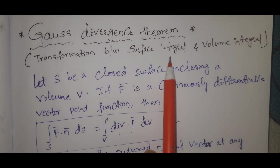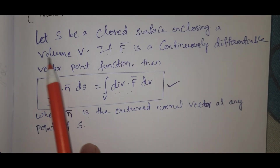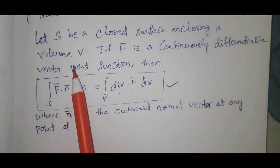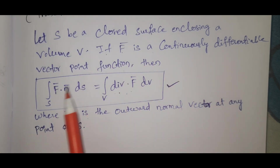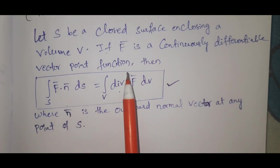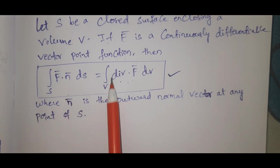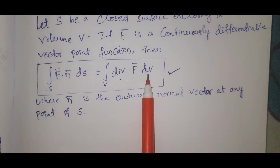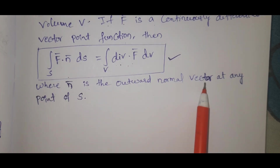This is a transformation between surface integral and volume integral. Let S be a closed surface enclosing a volume V. If f-bar is a continuously differentiable vector point function, then integral over S of f-bar dot n-bar ds equals integral over V of divergence of f-bar dv, where n-bar is the outward normal vector at any point of S.